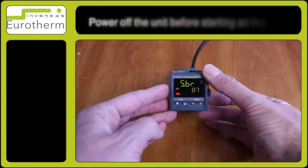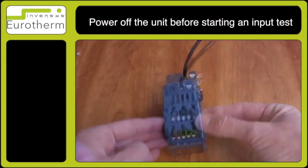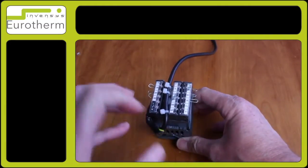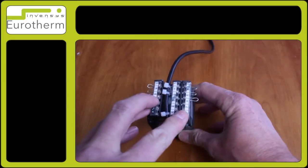The first thing we need to do is power off the instrument. Go to the back of the unit and observe V plus and V minus.